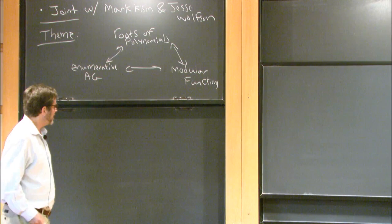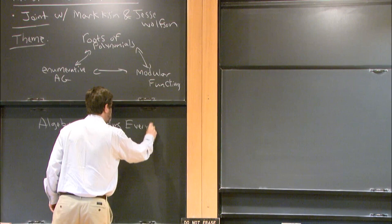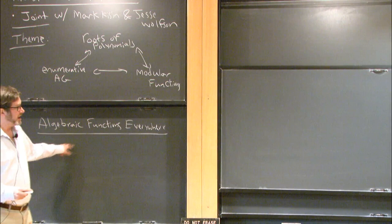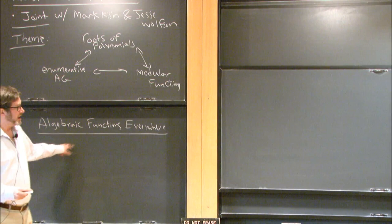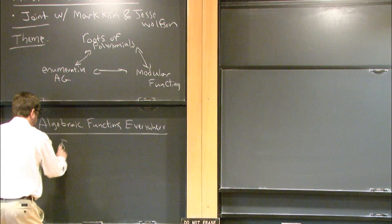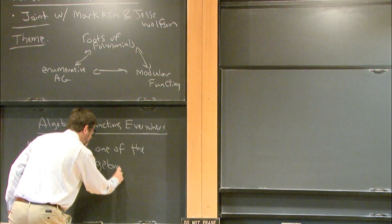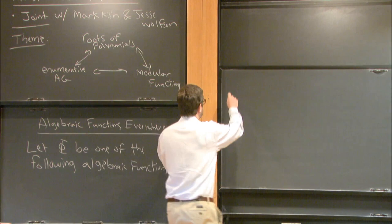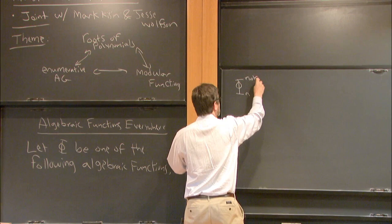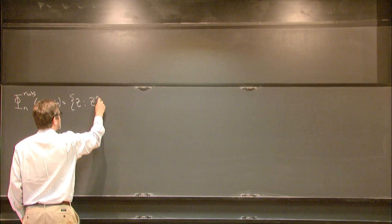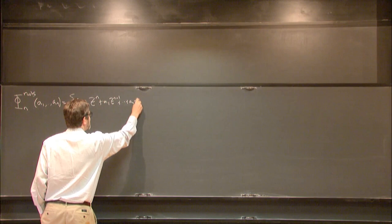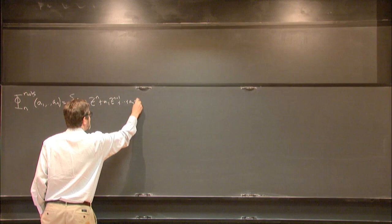We're trying a lot of different methods. Let me start out with three basic examples. I'll call this 'algebraic functions everywhere.' So consider the following three algebraic functions. Let phi be one of the following. The first I'll call phi sub n: roots of a1 to an. We saw this in all the talks so far. It's this multi-valued function — an algebraic function implicitly defined by a polynomial. Those are the coefficients of a polynomial, and it spits out the roots.